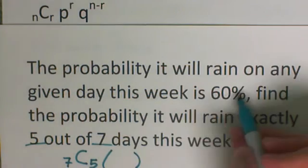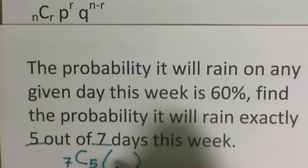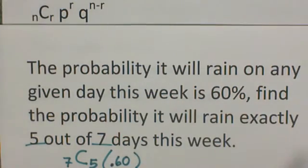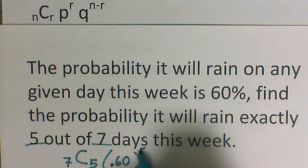The probability that it is going to rain is 60%. Now I'm going to write that as a decimal in here, .60 or if you really like fractions you could put it in as a fraction instead. This number here, how many days I want it to rain, goes up as the power.